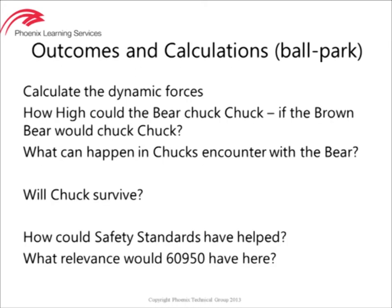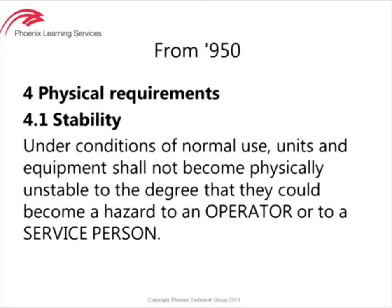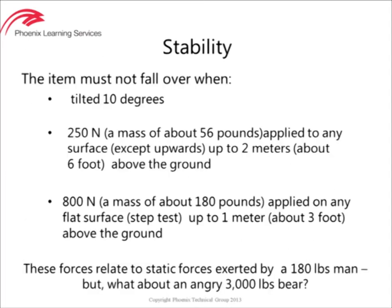Now we're going to look quickly at the overall requirements of standard 950, put in some figures and see what comes out. From 950 we're looking at the stability requirements. It simply says that under normal use, equipment shall not become physically unstable to the degree that it becomes a hazard to the operator or service person. The unit must not fall over when tilted to 10 degrees, when 250 newtons — equivalent to about 56 pounds — is applied to any surface except upwards, or when 800 newtons is applied to any surface up to 1 metre above the ground. This is the set test.